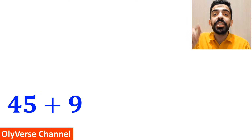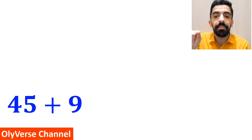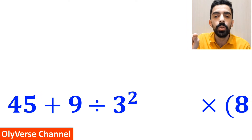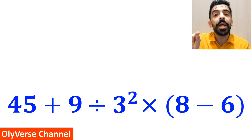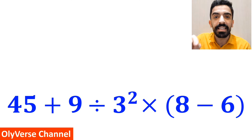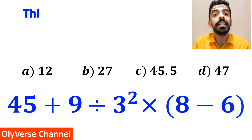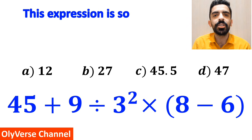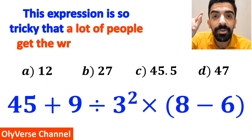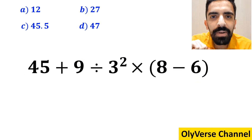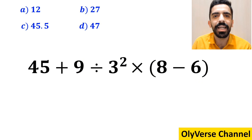What is the value of the expression 45 plus 9 divided by 3 to the power of 2, multiplied by open parenthesis 8 minus 6 close parenthesis? Which option do you think is the correct answer to this question? This expression is so tricky that a lot of people get the wrong answer. Let's dive in and break it down as a five-step together.